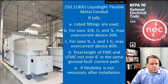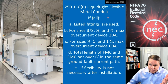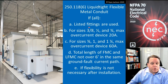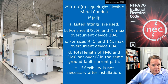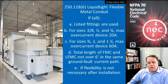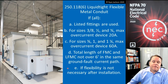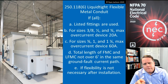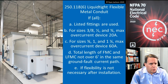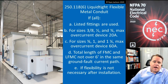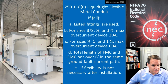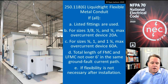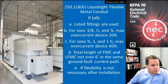We have similar allowances for liquidtight flexible metal conduit. You must use listed fittings. For ⅜, ½, and ¾-inch sizes the maximum overcurrent device is 20 amps; for larger sizes up to 1¼ inch you can go up to a 60-amp circuit breaker, as long as total length does not exceed six feet in the same ground fault return path, and flexibility is not needed after installation. Looking at this picture, if this raceway is one inch or 1¼ inch I could have up to a 60-amp breaker and not need a green wire — but notice it has wheels, so flexibility is needed after installation.